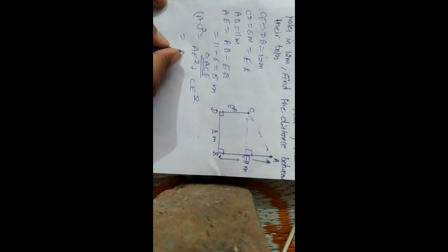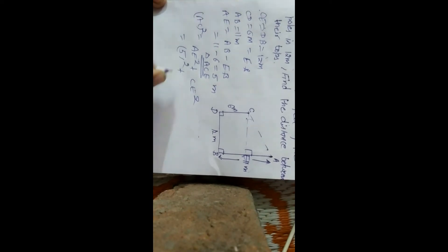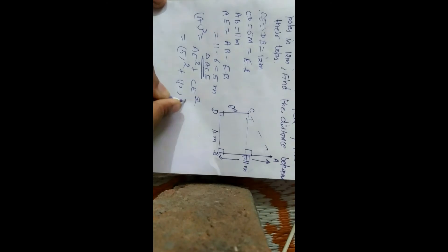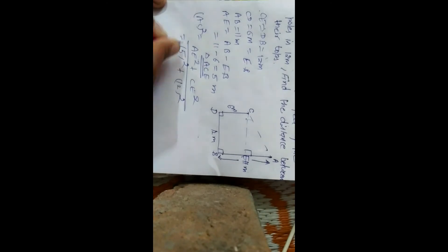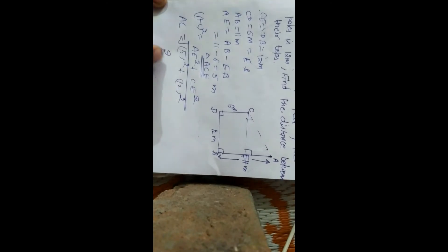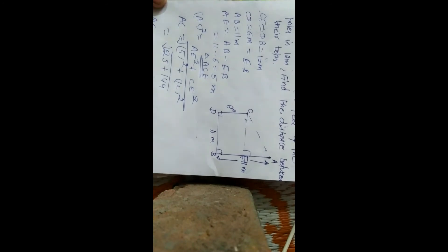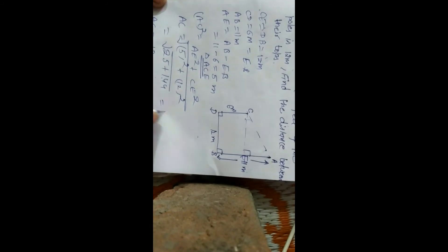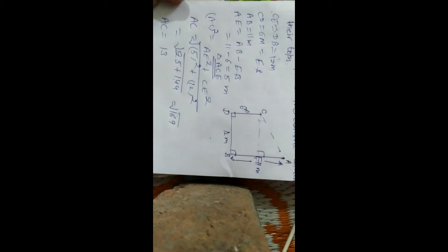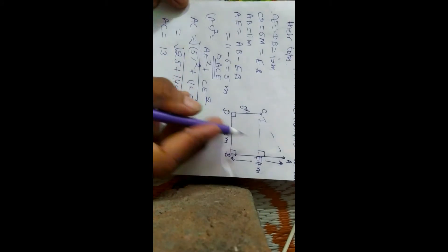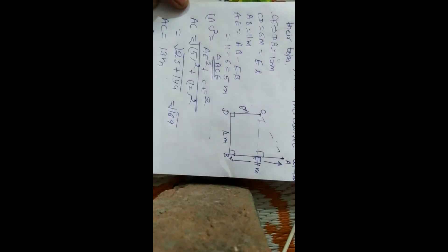AE = 5 meters, CE = 12 meters. AC² = 5² + 12² = 25 + 144 = 169. Therefore AC = √169 = 13 meters.